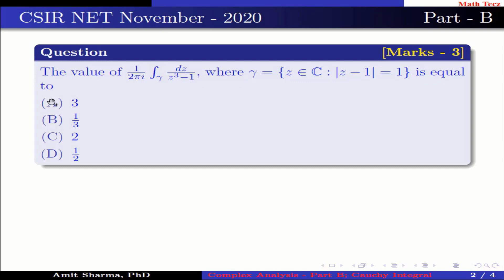Option A: 3. Option B: 1 by 3. Option C: 2. Option D: 1 by 2. We have to learn the following result in order to solve the question.